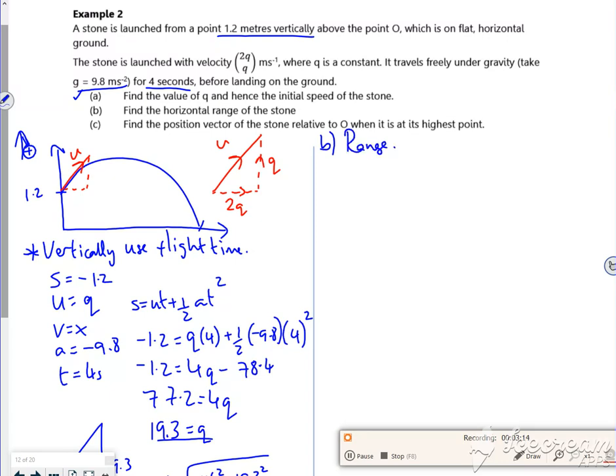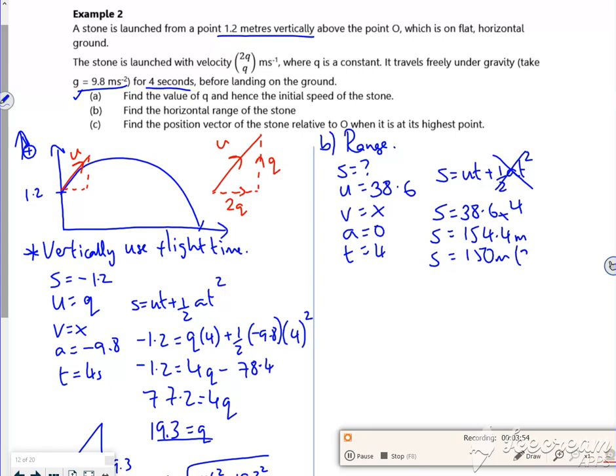So I want the range. s I don't know, u we've said is 38.6, v don't care about, a is 0, time is 4. s equals ut plus a half at squared, a is 0, so s is 38.6 times by 4, so it's 154.4 meters.